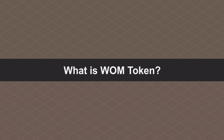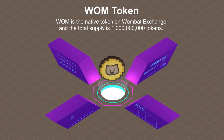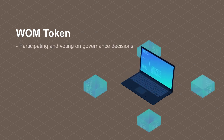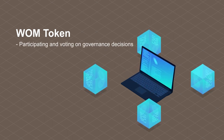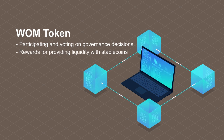What is the WOM token? WOM is the native token on Wombat Exchange and the total supply is 1 billion tokens. WOM is the governance token used for participating and voting on governance decisions, and for earning rewards for providing liquidity with stablecoins.